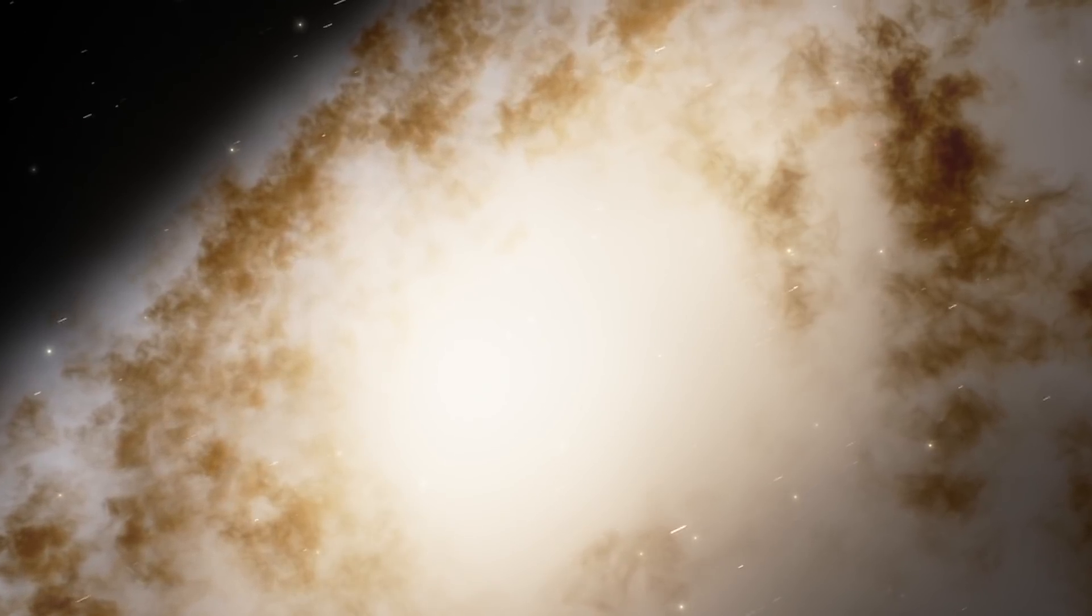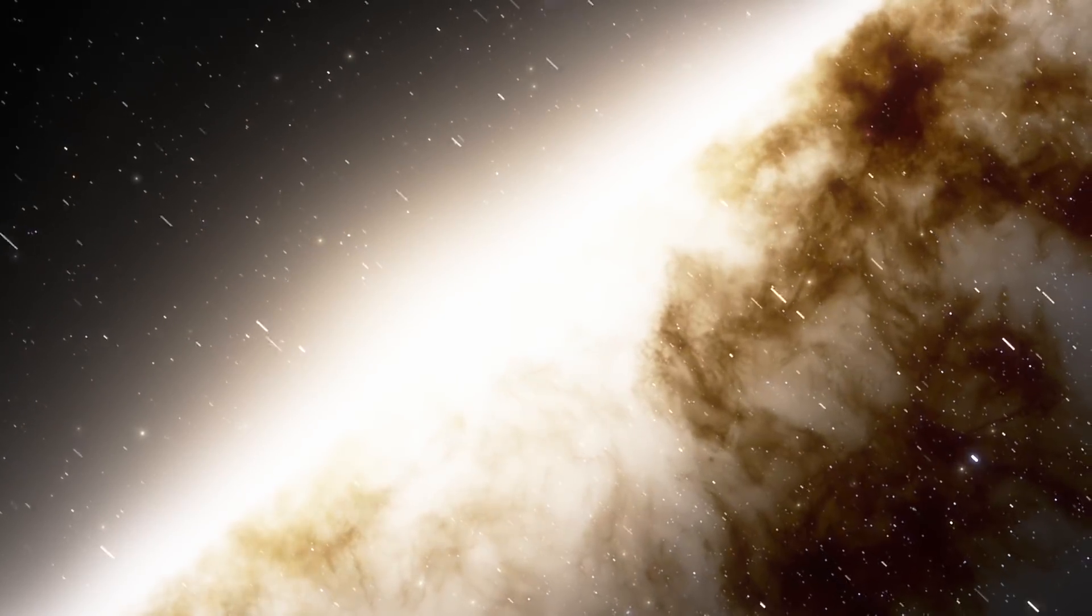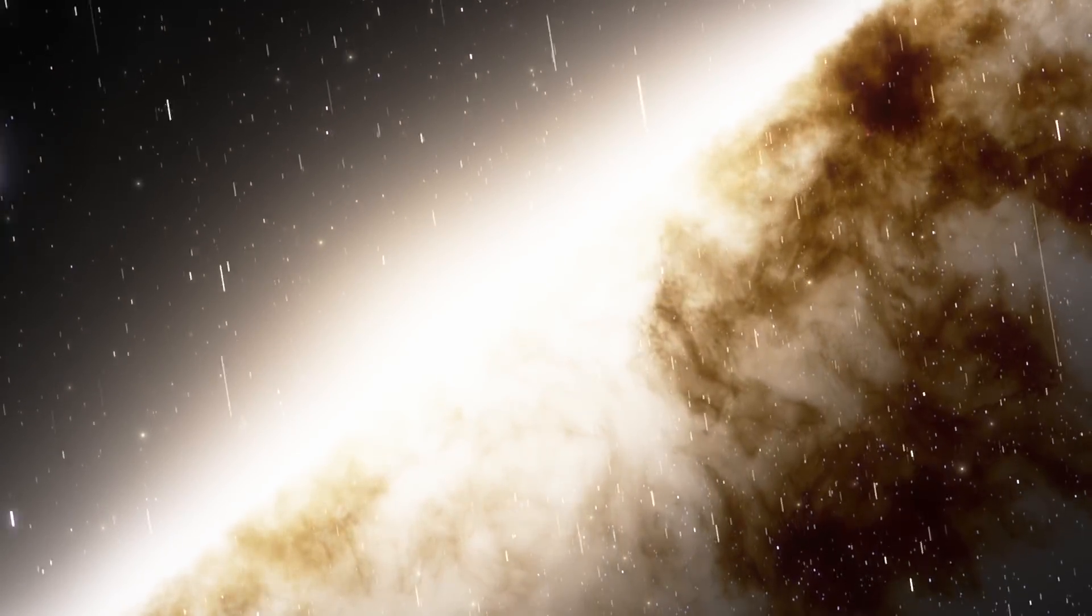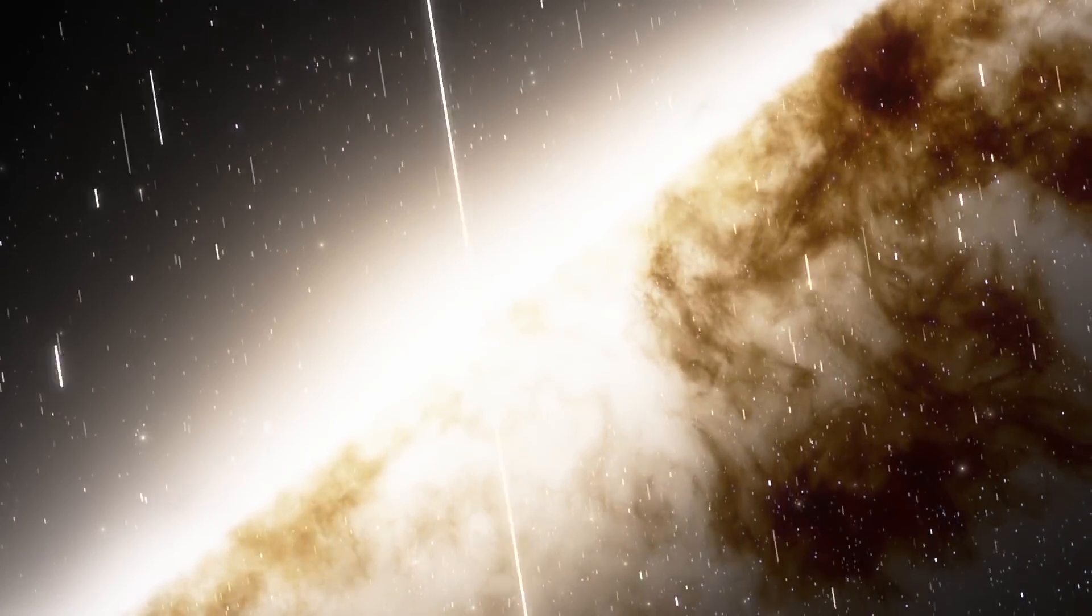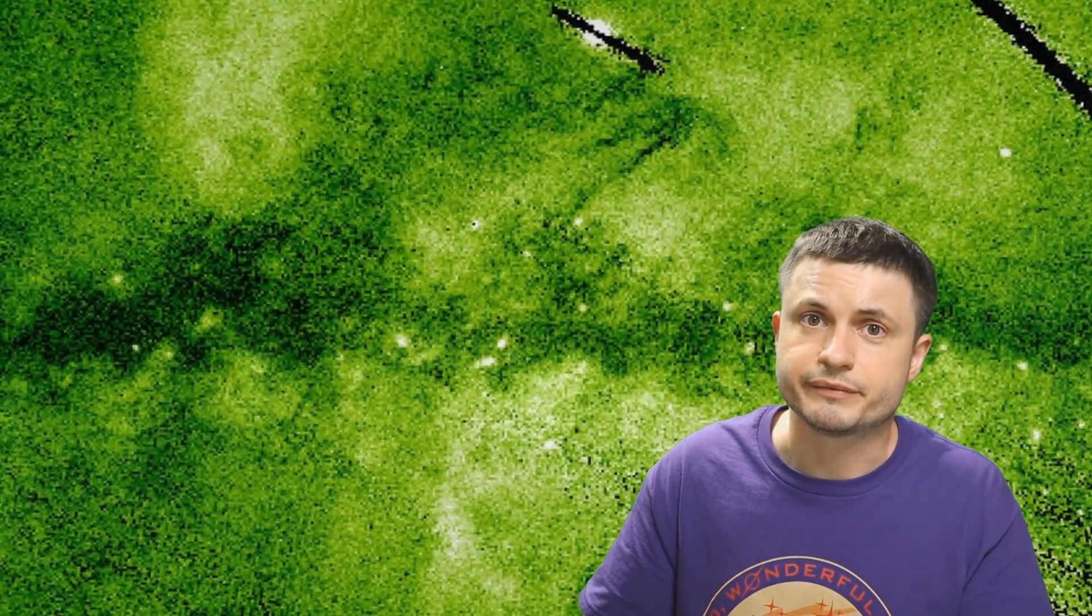From our perspective most of it looks like this, and so trying to tell apart what's happening here or learning any details requires very specific observations using specific frequencies of light. In optical light that our eyes can see we cannot actually see anything, but once we look at the universe in X-rays and start looking at the center of the galaxy in that particular frequency of light, we start seeing a little bit more detail.